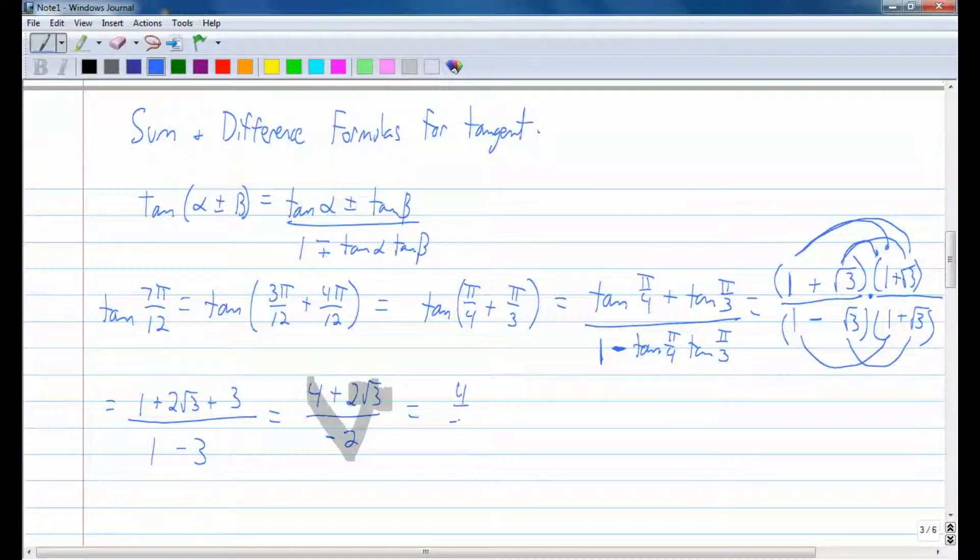Alright, so 4 divided by negative 2, 2 square root of 3 divided by negative 2. And simplify those, you get negative 2 minus 1 square root of 3. That's your final answer on that one.